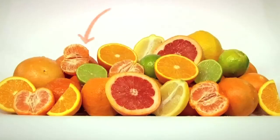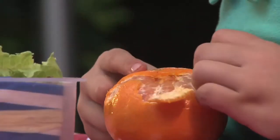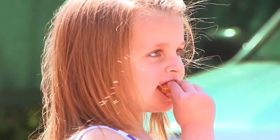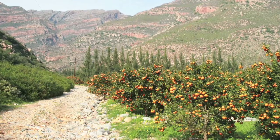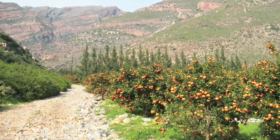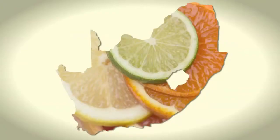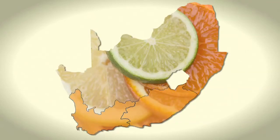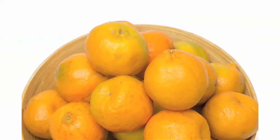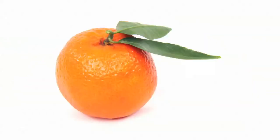Soft citrus is a collective name for a group of fruit also referred to as easy peelers, or in common tongue, naartjies. The main characteristic these fruits have in common is that they are easy to peel and tasty, making them the ideal snack fruit. Soft citrus is grown in cooler, drier production areas, although some cultivars have been shown to be suited to hotter regions. Still, 75% of soft citrus in Southern Africa is planted in the Eastern and Western Cape. There are three distinct varieties of soft citrus: Satsumas, Clementine, and Mandarin.